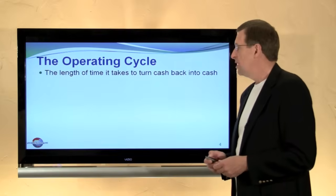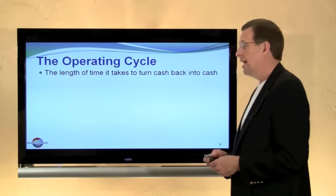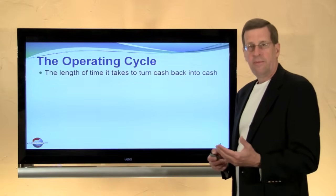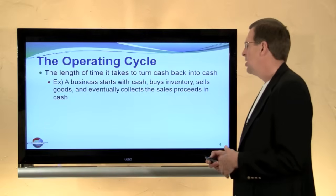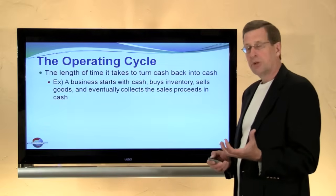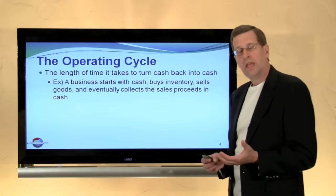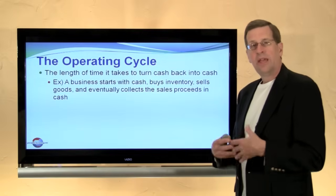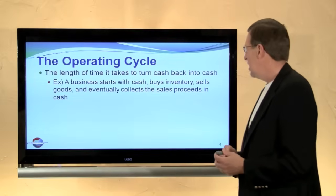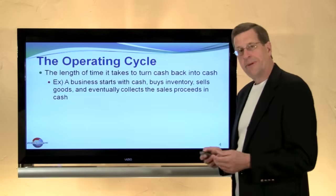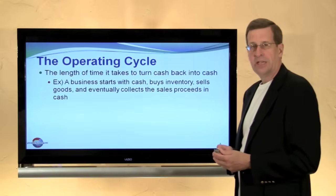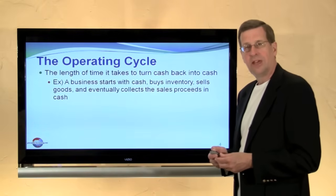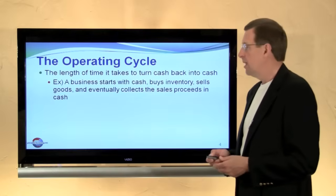This recalls a recollection of the operating cycle — that's the length of time it takes to turn business cash back into business cash. A business might start with cash, buy inventory, sell those goods and carry a receivable, and then eventually collect the receivable. The length of time it takes to do that is the operating cycle, and that's part and parcel of considering the definition of a current liability.